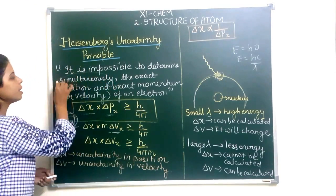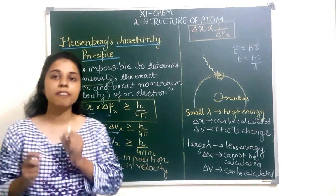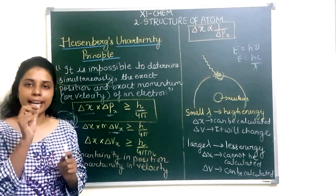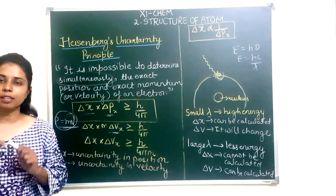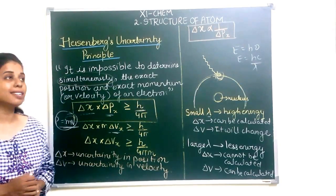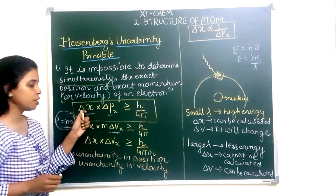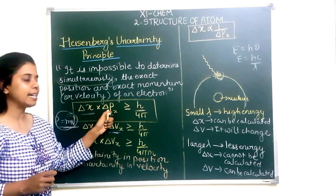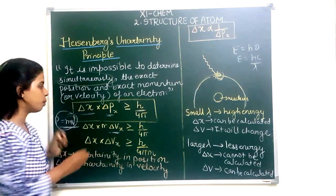The word 'simultaneously' is very important in this statement — it means at the same given point of time you cannot determine its exact position as well as exact velocity. Mathematically, Heisenberg expressed his statement by writing: Delta X into Delta P is greater than or equal to H upon 4 pi.